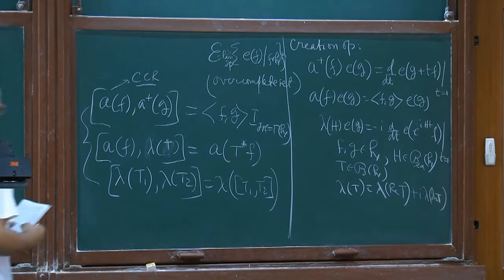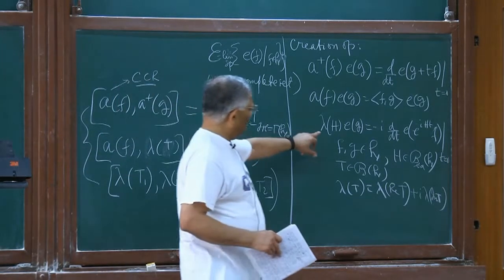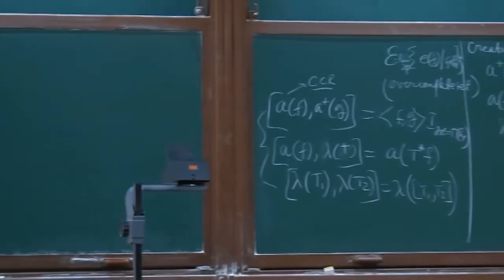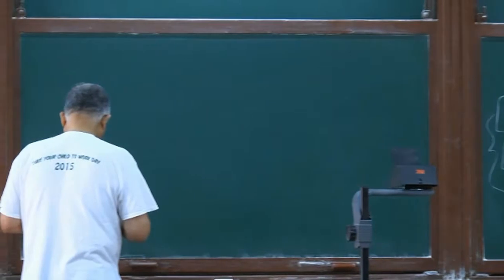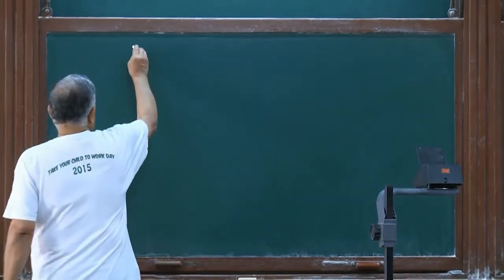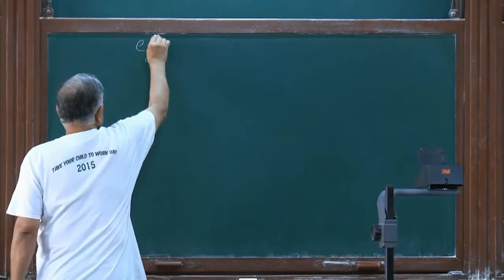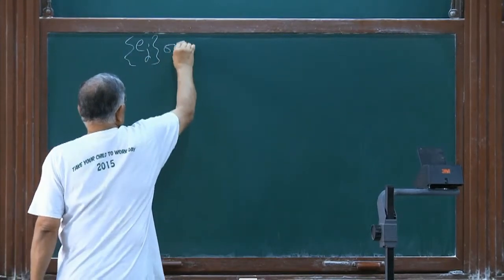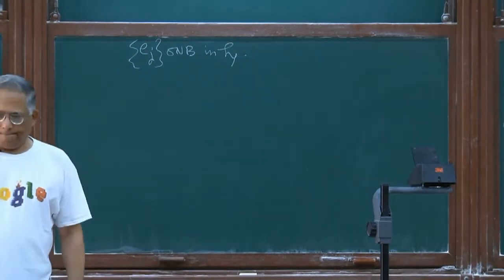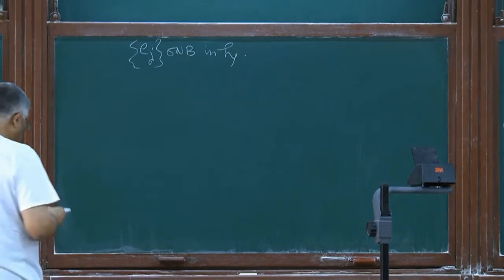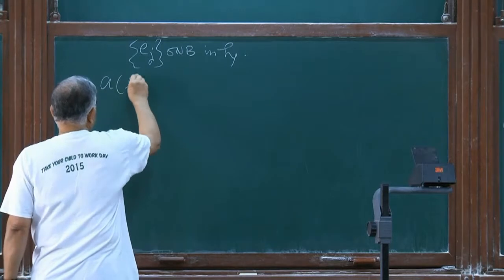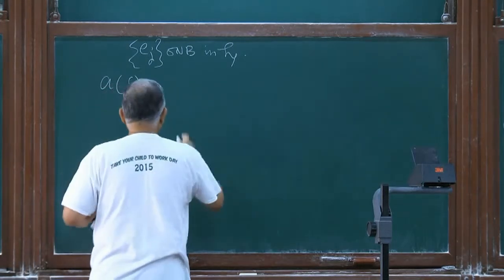These sets of commutation relations — this is called the CCR, which I had mentioned. But the whole thing you may call CCR in an extended sense. These you can find in many places, including Parthasarathy's book. Now I want to rewrite this lambda a little differently. Let me choose an orthonormal basis in the base space, indexed by J.